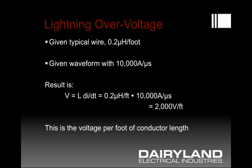Here's an example calculation showing the effect of conductor length and inductance. A typical wire might have an inductance of approximately 0.2 microhenries per foot. Looking at a lightning waveform with a rate of rise of current of 10,000 amps per microsecond, the resulting calculation shows that you can have several thousand volts per foot of conductor length.